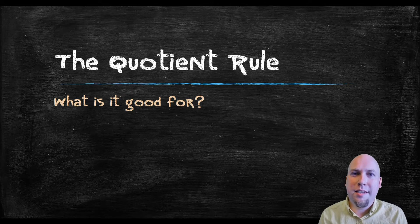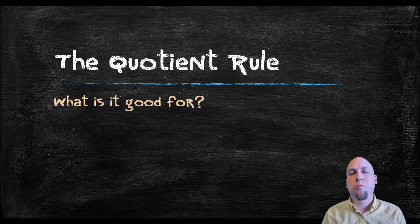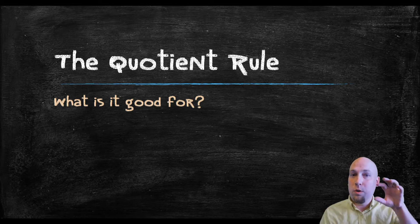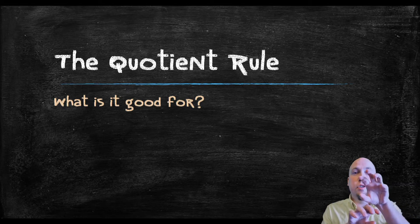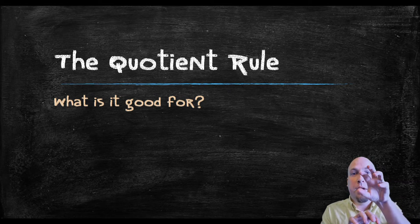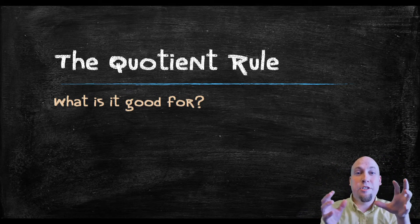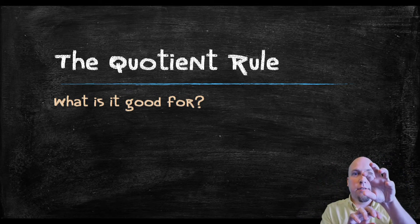Hey folks, my name is Nathan Johnston, and today we're going to learn about one final derivative rule, something called the quotient rule. What this is, is it's a rule that tells us how to take the derivative of the quotient or the division of two functions, as long as you know the derivatives of the top and bottom individually. This rule tells you how to combine those derivatives to get the derivative of the overall fraction.